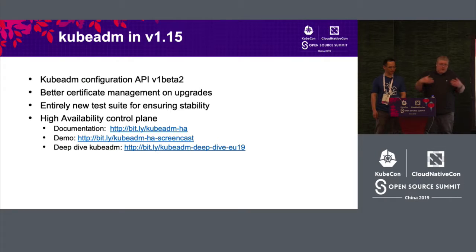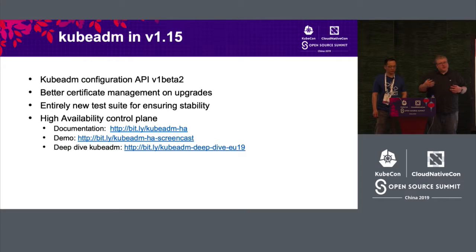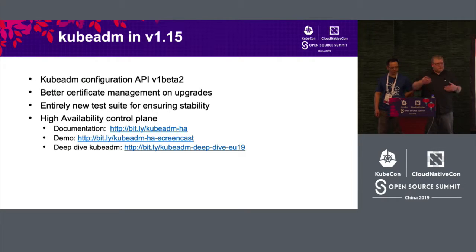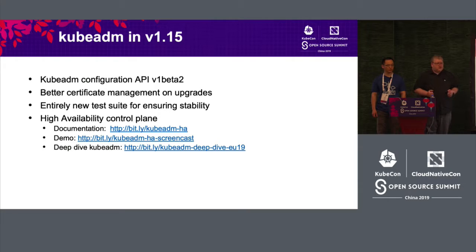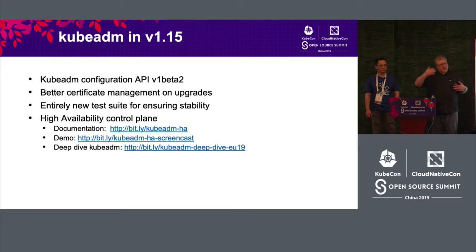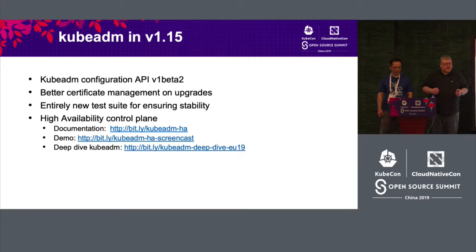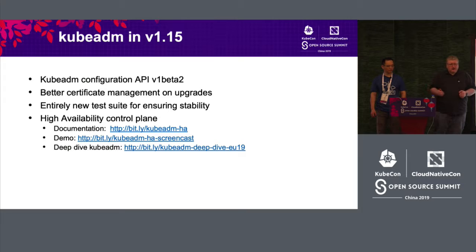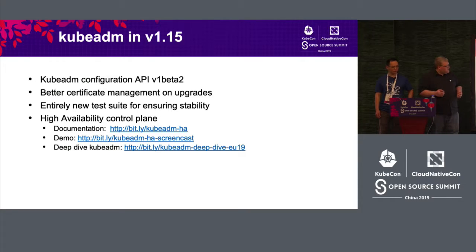Another improvement based on user feedback was certificate management. Now with KubeADM, during upgrades it checks if your certificates are going to expire, and if they are close to expiration, it renews them for you — giving you seamless cluster usage without interruption. Testing was also a key focus for this release: we now have an entirely new test suite to do proper end-to-end testing of installation and upgrades in CI. And last but not least, high availability — Fabrizio and our contributors worked very hard. We have good documentation about it, and Lucas recently did a screencast showing all the steps to create the first master node and join second and third master nodes.